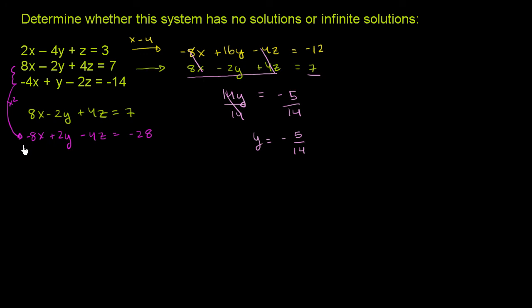And something very interesting is about to happen. When you use these two constraints, when you try to find the intersection essentially between these two planes, you get something very bizarre. 8x minus 8x is 0. Negative 2y plus 2y is another 0. 4z minus 4z, another 0. And 7 minus 28 is negative 21. So using these two constraints, you get this kind of nonsensical statement or inconsistent statement that 0 is equal to negative 21.